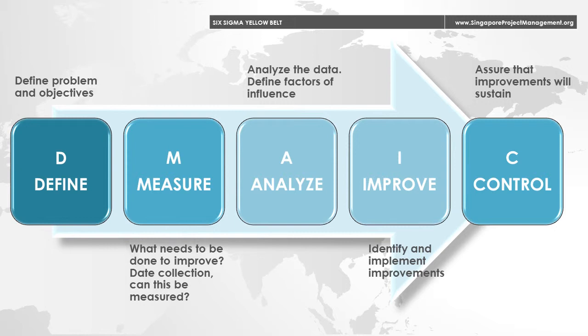The last step of DMAIC is to control, to make sure that there are no deviations from the target. This would mean setting up pilot runs and mechanisms to monitor all processes.